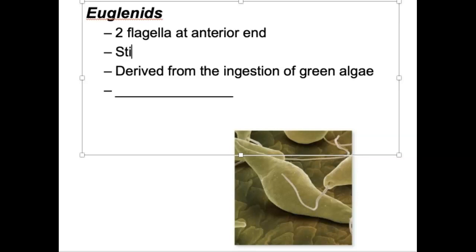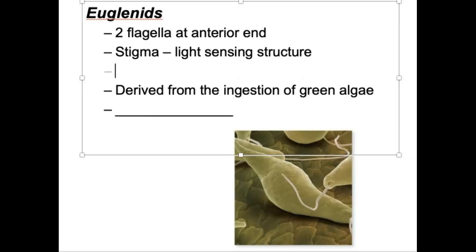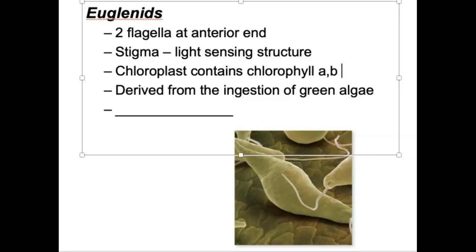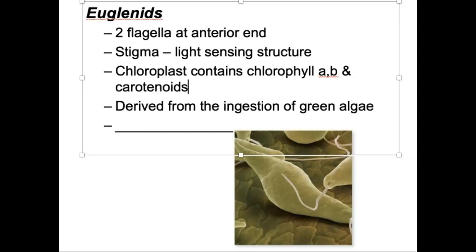Another big feature for Euglenoids is a thing known as a stigma — a light-sensing structure. These guys can detect light levels. They cannot see; they can just detect light levels and move towards or away from the light. Now because they're moving towards and away from light, they are photosynthetic. So they will contain chloroplasts, and the chloroplasts will contain the pigment chlorophyll A and chlorophyll B so they can absorb as much light wavelengths as possible.